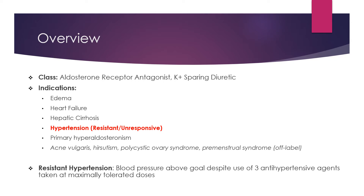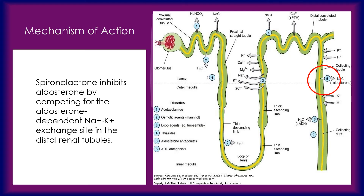Spironolactone, as mentioned before, is used for the management of hypertension that is unresponsive to other therapies, which is also known as resistant hypertension. This is defined as blood pressure that remains above goal despite concurrent use of three antihypertensive agents of different classes taken at maximally tolerated doses, one of which should have been a diuretic. Spironolactone works by inhibiting the effects of aldosterone by competing for the aldosterone-dependent sodium-potassium exchange site in the distal renal tubules, as you can see circled in red in the figure on the right. This inhibition leads to an increase in sodium, chloride, and water excretion, while conserving the potassium and hydrogen ions.